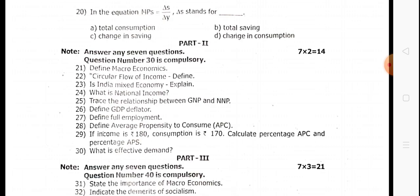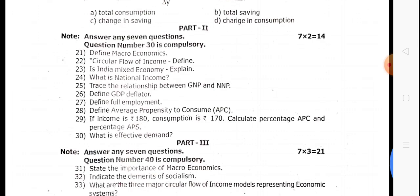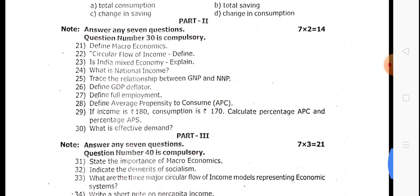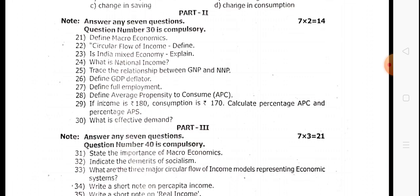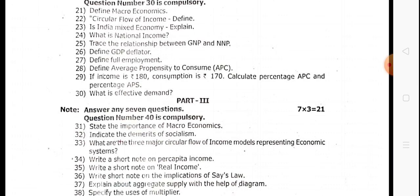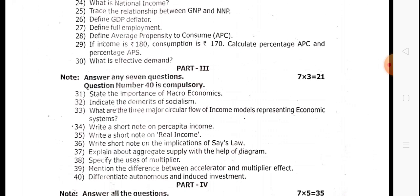Two-mark questions: question 24 — what is national income? Book pack. Question 25 — trace the relationship between GNP. Book pack. Question 26 — define GDP. Book pack. Question 27 — define full employment. Book pack. Question 28 — define average propensity to consume. Book pack. Question 29: income is 180, consumption is 170 — calculate APC and APS. Question 30 — what is effective demand? Book pack.